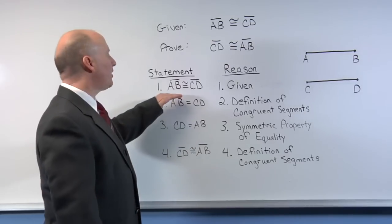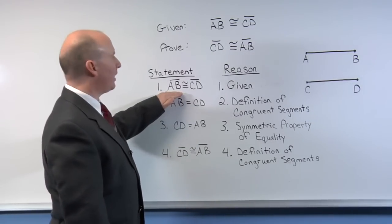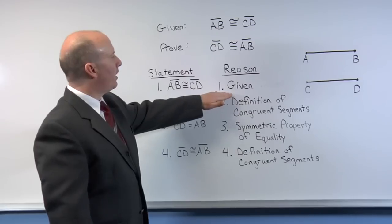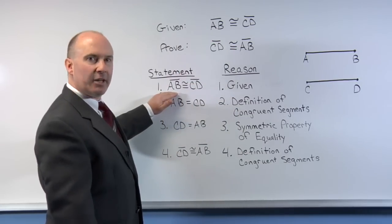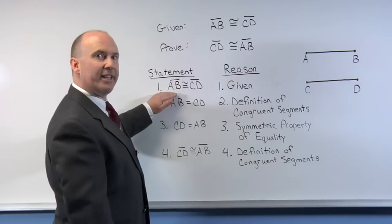The first step to a two-column proof is fairly easy because it always begins with a given statement. In this case, line segment AB is congruent to line segment CD.